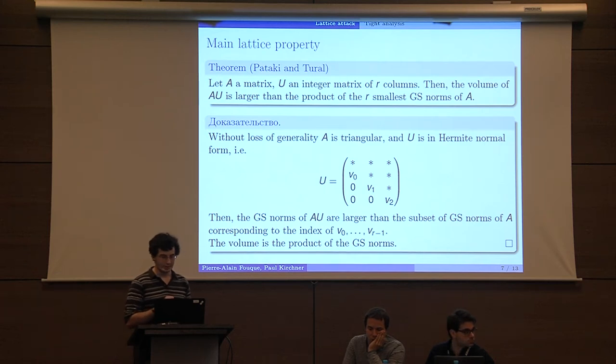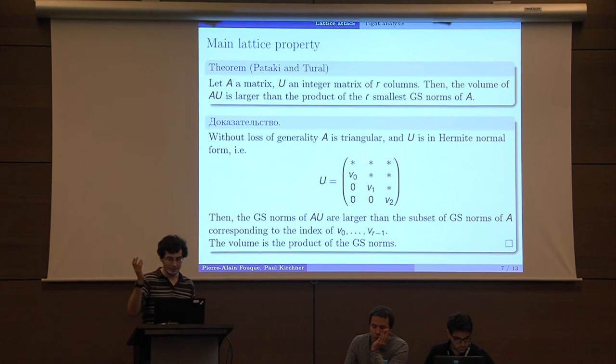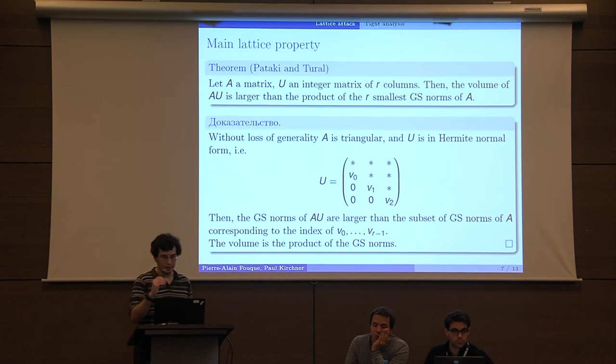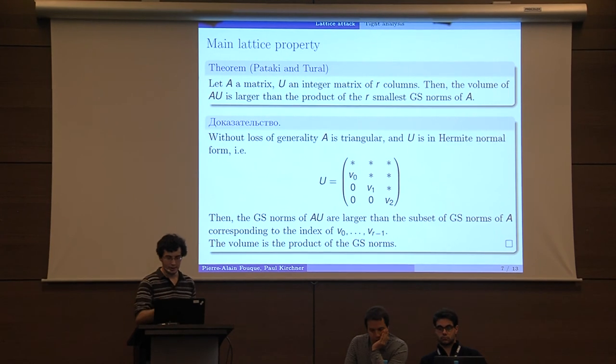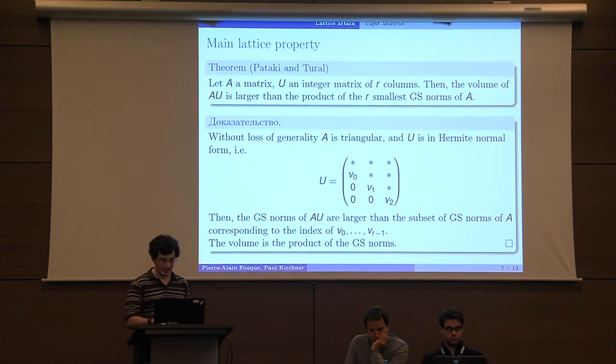Now you can consider the Gram-Schmidt norms of AU. The first one will be larger than the index corresponding to the entry V0, which is larger than 1. For the second vector, the orthogonalization will change the value corresponding to the top of U but not the bottom. So we know that the Gram-Schmidt norm is larger than the Gram-Schmidt norm of A with index V1. It is the same for those others, and finally the volume of the lattice AU is the product of the Gram-Schmidt norms.